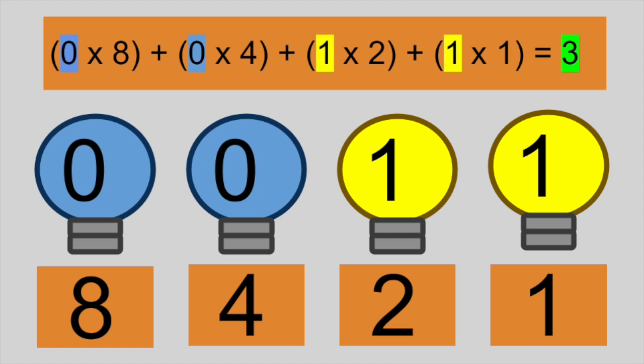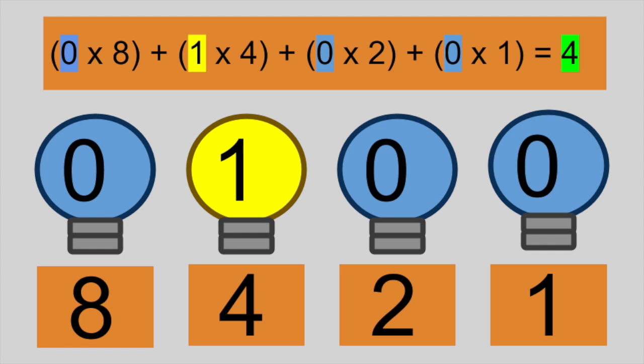What we now have is 1 times 2 plus 1 times 1. To represent the value 4, we turn on the third bulb only. What we have now is 1 times 4 plus 0 times 2 plus 0 times 1. So just 4. To represent the value 5, we add 1 times 4 plus 0 times 2 plus 1 times 1. So it's 4 plus 1.